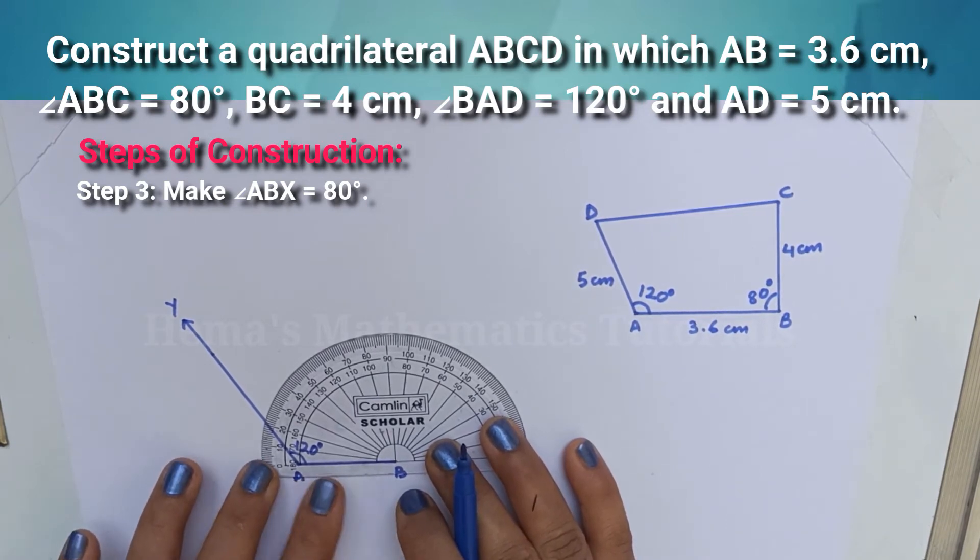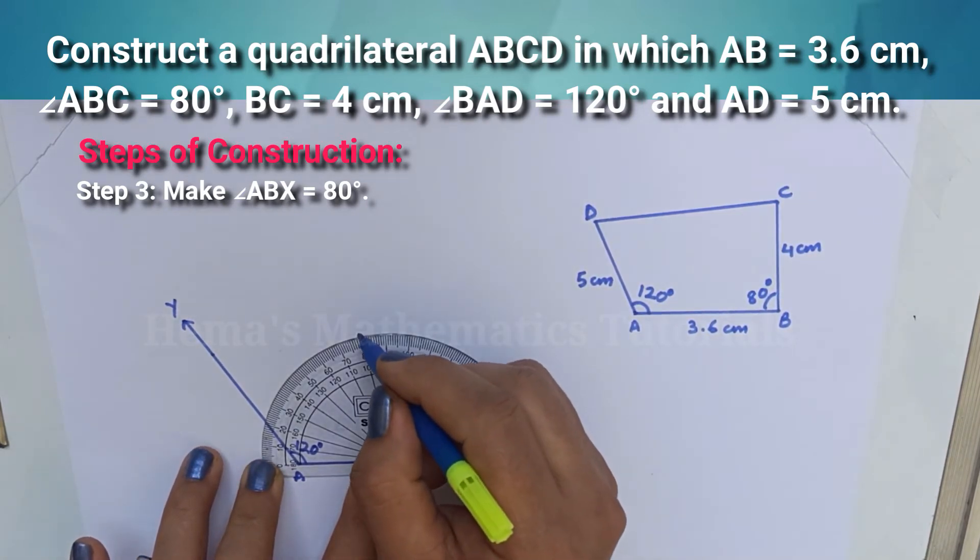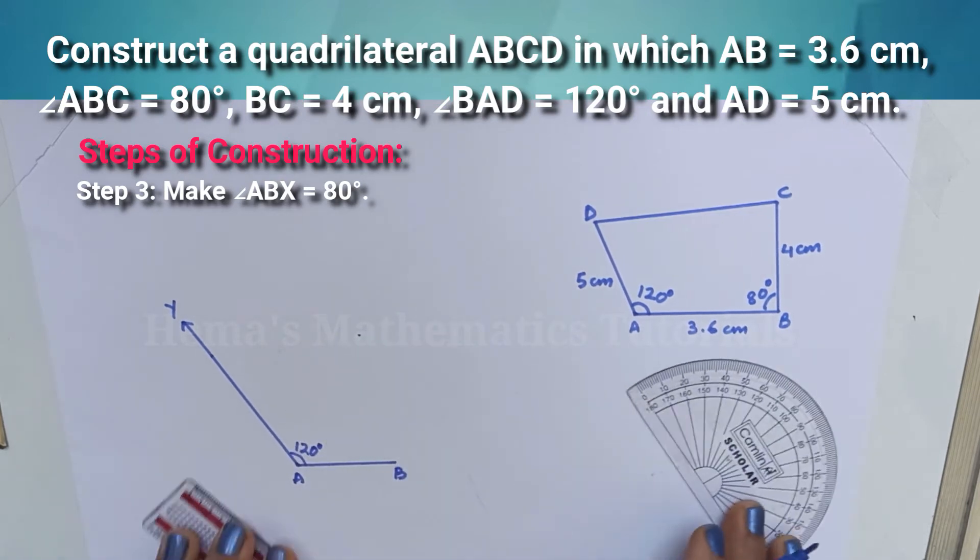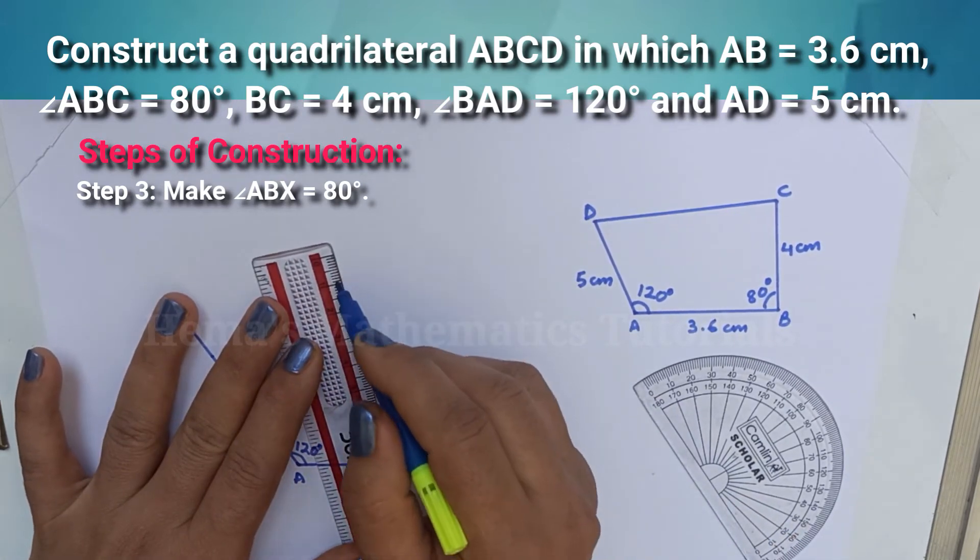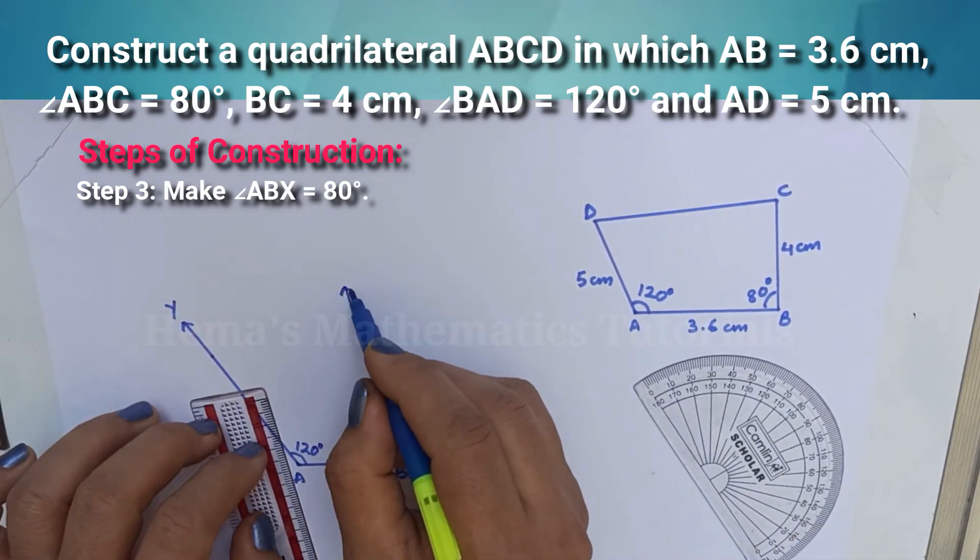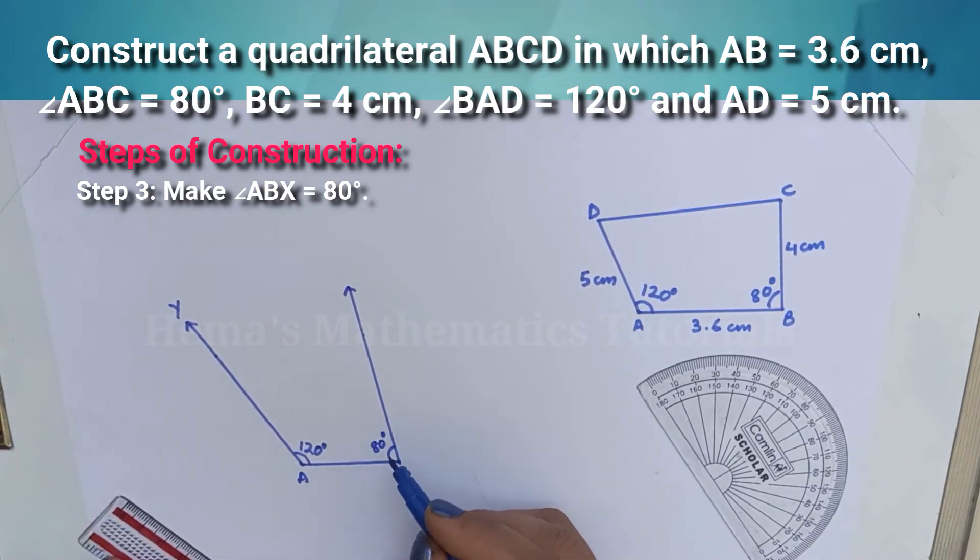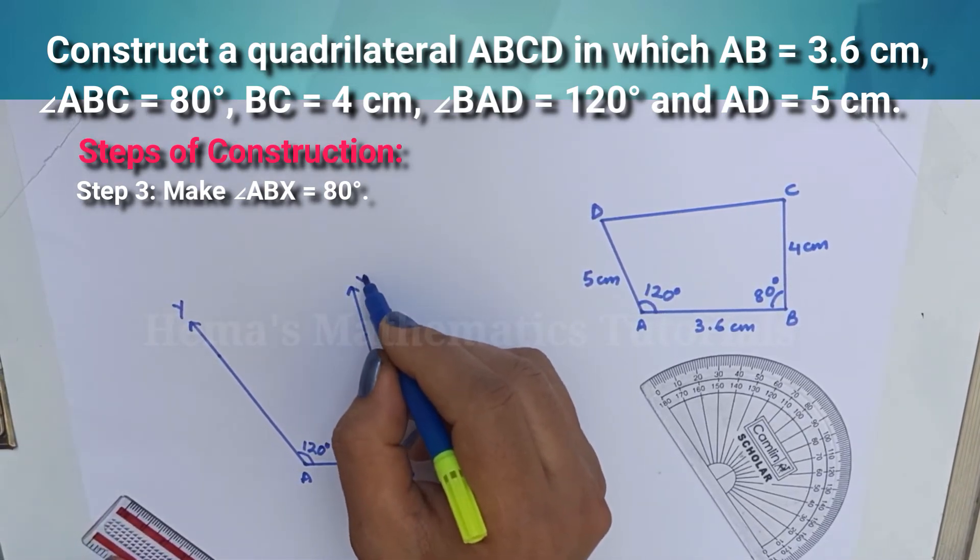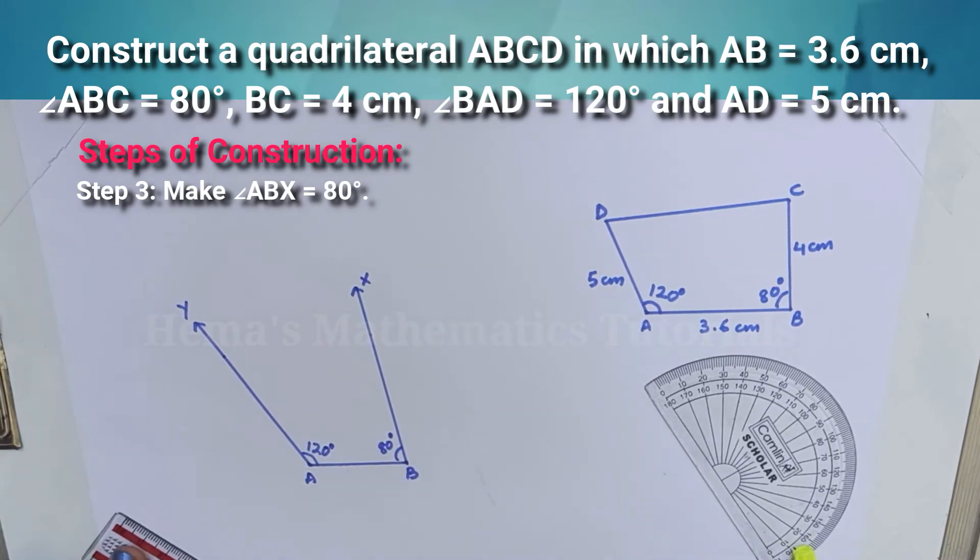Place your protractor at B and make angle B equal to 80 degrees. Therefore, angle ABX is equal to 80 degrees.